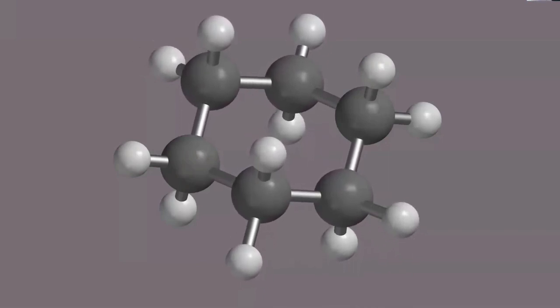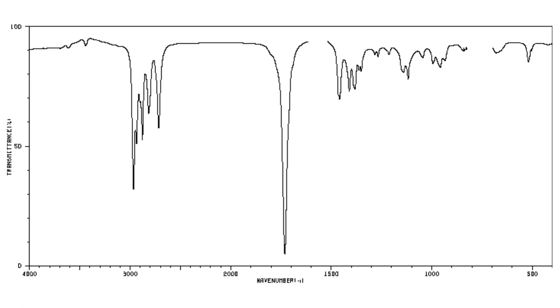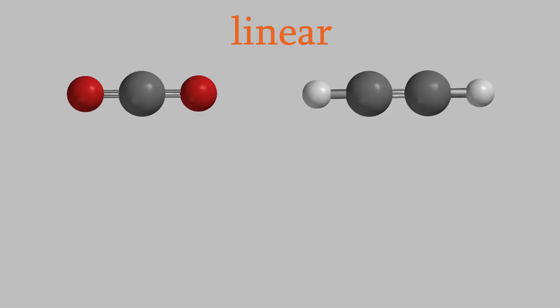First of all, let's think about the number of different vibrations that can occur in a single molecule. If you've taken an organic chemistry course you probably spent some time looking at IR spectra like this one. As you can see there are lots of different peaks, and each one corresponds to the frequency of a different vibration in the molecule. As you might imagine, the larger and more complex the molecule, the larger the number of different vibrations that can occur in it. As it turns out, there's a simple formula for determining the number of vibrations. For linear molecules like carbon dioxide or acetylene, the number of vibrations is given by 3n minus 5, where n is the number of atoms in the molecule.